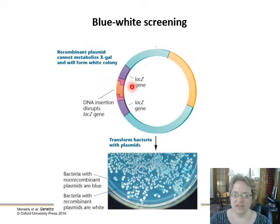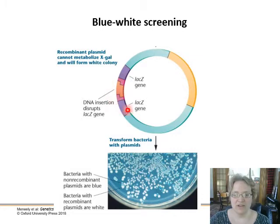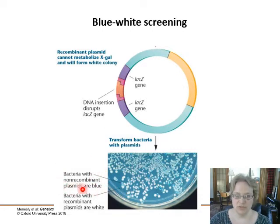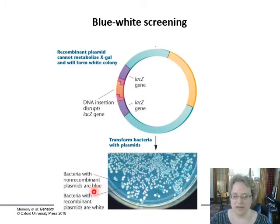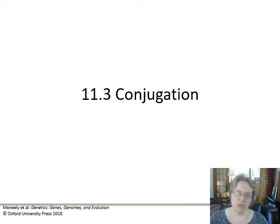This is the idea behind blue-white screening. LacZ, if present and functional, will break down a dye you add called X-gal. So if the DNA insertion goes well, it disrupts the lacZ gene and you won't see any blue dye. If you have a non-recombinant plasmid where the gene wasn't put in, it stays blue. But if you break lacZ so it can no longer make the dye, you'll have a white colony. That's the idea — whether or not you break this gene by inserting your new gene of interest. That's transformation, which will come up again when we talk about biotechnology.